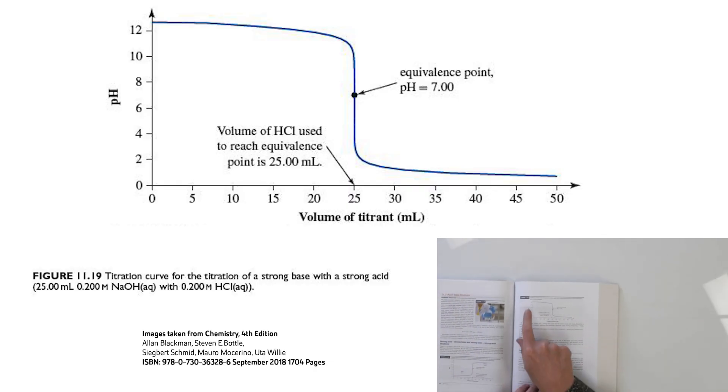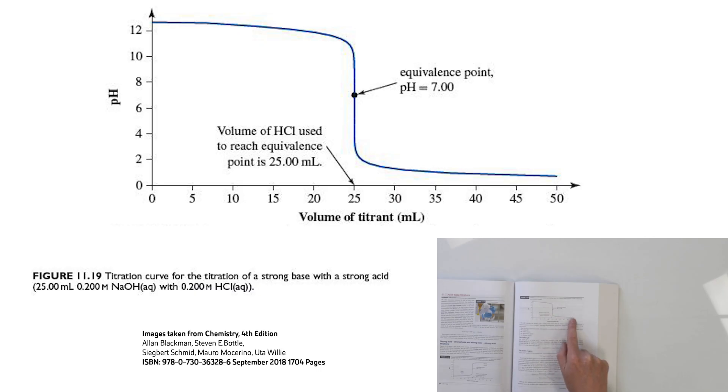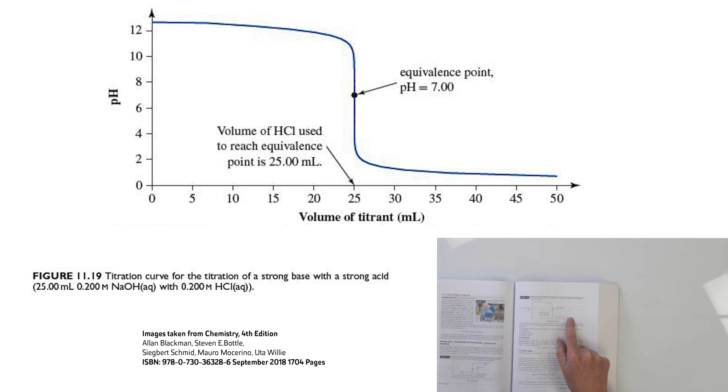That's strong acid/strong base. We can fairly quickly cover the strong base/strong acid titration, because it's essentially a mirror image. We start off with 0.2 molar sodium hydroxide in our conical flask, and we're adding 0.2 molar HCl from the burette. The equivalence point again has a pH of 7, because at the equivalence point you've got a solution of sodium chloride, NaCl. It again takes exactly 25 mL to reach the equivalence point, where the reaction is essentially complete.